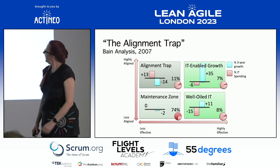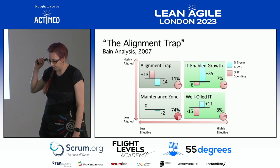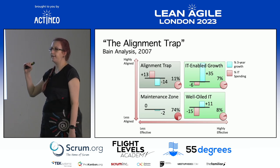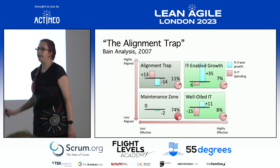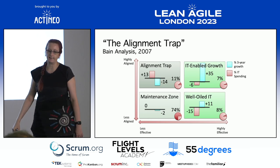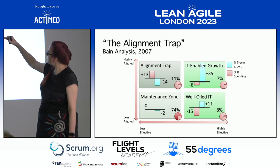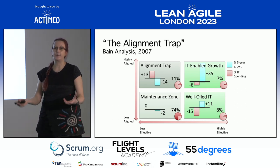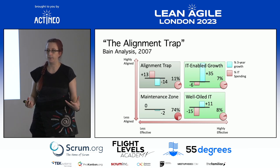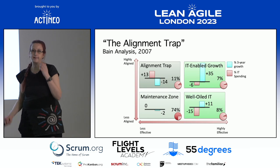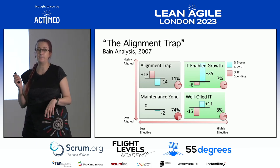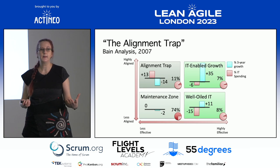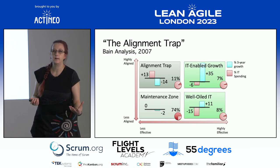The Alignment Trap analysis from 2007: you want to be in 'enabled growth' — well-aligned with customers and great engineering practices. If you try to align with customers before you have great engineering practices, you get buggy stuff they don't like and you lose market share year-on-year while IT costs go up. You've got to get those systems in place — that beautiful CI/CD pipeline. As Julian Birkinshaw's model shows, when labor and production are the scarce resource it leads to bureaucracy — your testers doing manual testing. You've got to automate it.